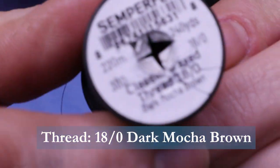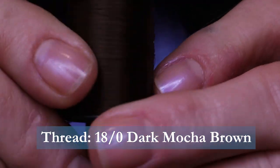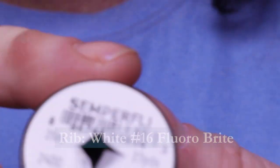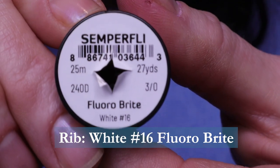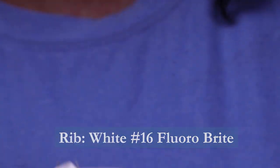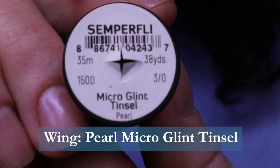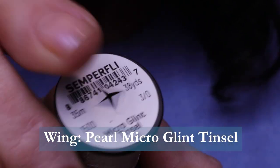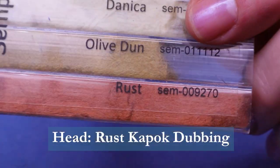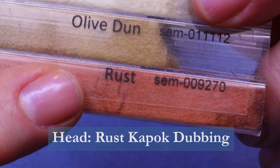For thread I'm using Semperfly Classic Waxed in dark mocha brown. For the rib I'll be using Semperfly Floral Bright in white. For the wing I'm using microglint tinsel in pearl. And for the head I'll be using Semperfly Kapok dubbing in rust color.